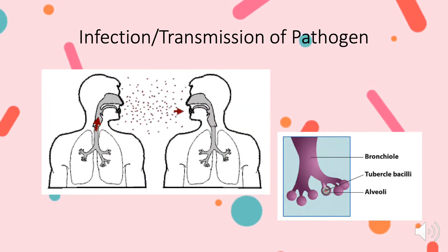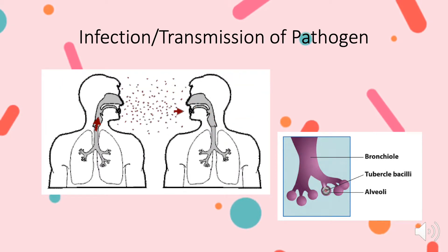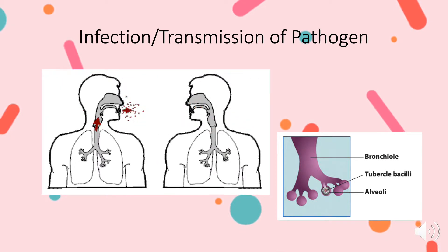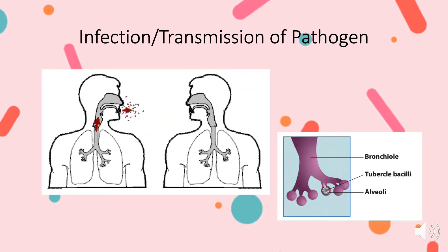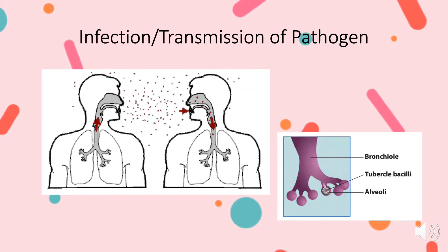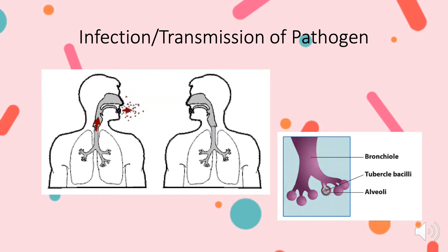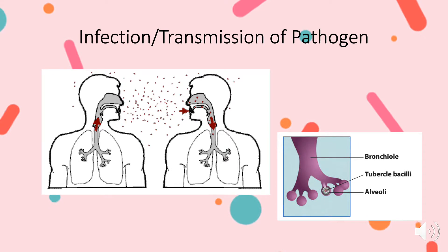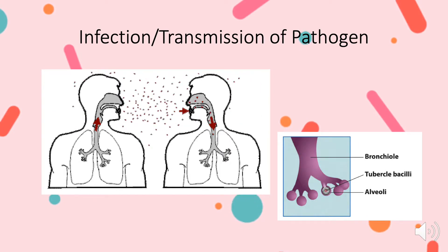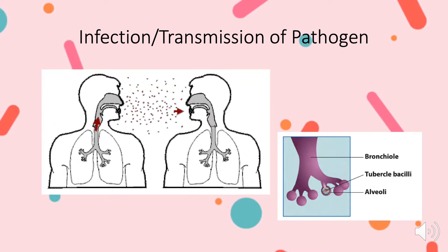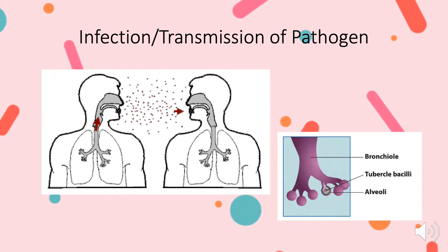Mycobacterium can be found in airborne particles that are created when a person who is already infected with pulmonary or laryngeal TB coughs, sneezes, or shouts. If these airborne droplets are inhaled by another person, the bacteria journeys through the nasal passages, upper respiratory tract, and bronchioles to reach the alveoli of the lungs.